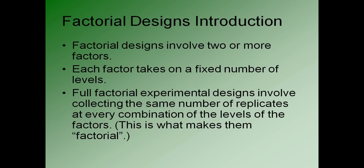Now we're going to be talking about factorial experiments in these slides. Factorial experiments involve two or more factors that you're interested in, things like perhaps temperature or pressure or both. Each of these factors is going to take on a fixed number of levels. For example, we may set temperature at low or high, pressure at low, medium, or high, and so on. A full factorial experiment involves collecting generally the same number of replicates at every possible combination of the factors. It's the fact that you're collecting data at all combinations of the factors that makes this a factorial experiment.